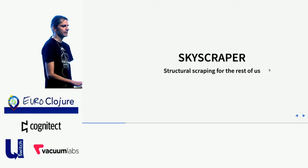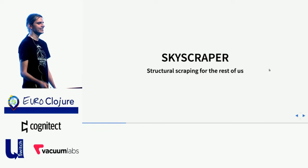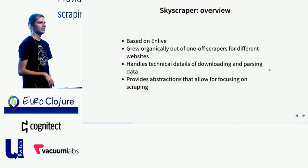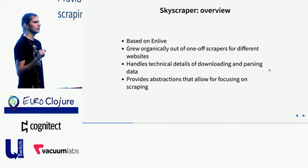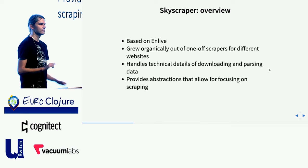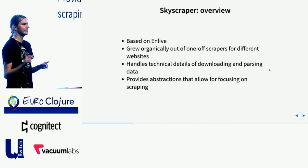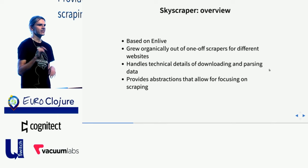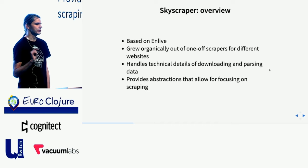Let's start with Skyscraper. The tagline I've invented for it reads: 'Structured scraping for the rest of us.' Skyscraper is a library for scraping whole sites at once, based on Enlive. Enlive is a Clojure library that allows you to parse HTML and extract parts of the parsed HTML tree using sophisticated Clojure-based selectors that are composable and provide a high level of expressivity.